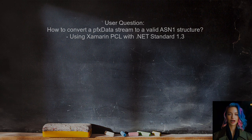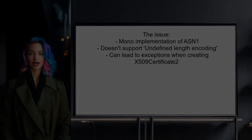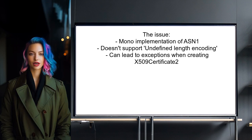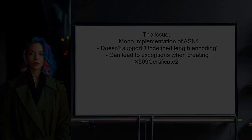The issue arises from the Mono implementation of ASN1, which doesn't support undefined length encoding. This can lead to exceptions when trying to create an X509Certificate2 from the raw data. Understanding this is crucial for finding a solution.